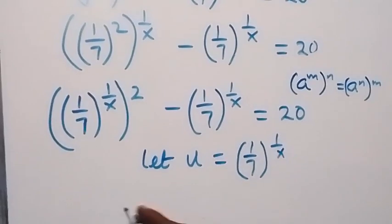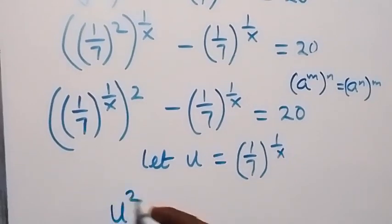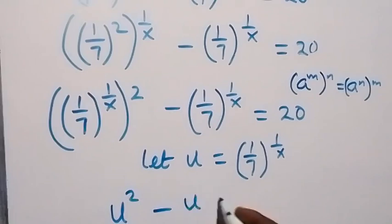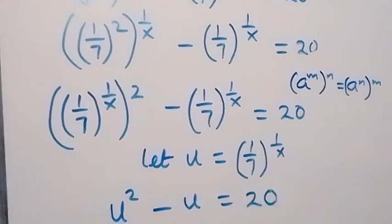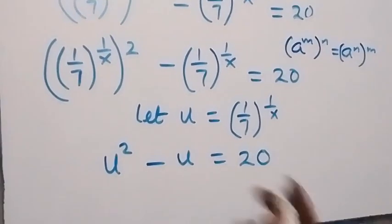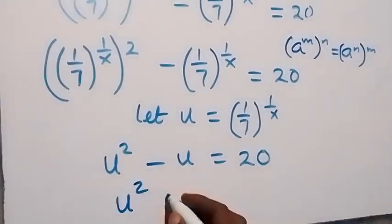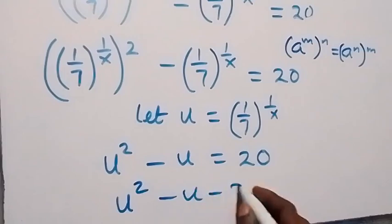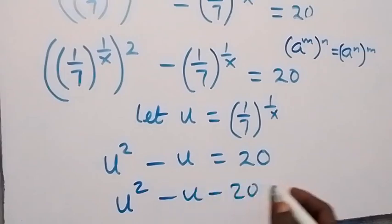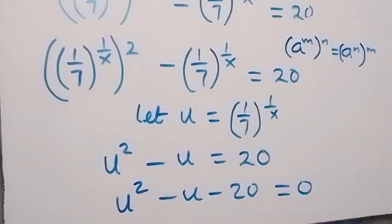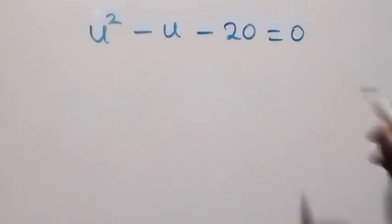What we have here becomes u squared minus u equals 20. Taking 20 to this side to form an equation, we get u squared minus u minus 20 equals 0. We can solve this quadratic equation using the factorization method.